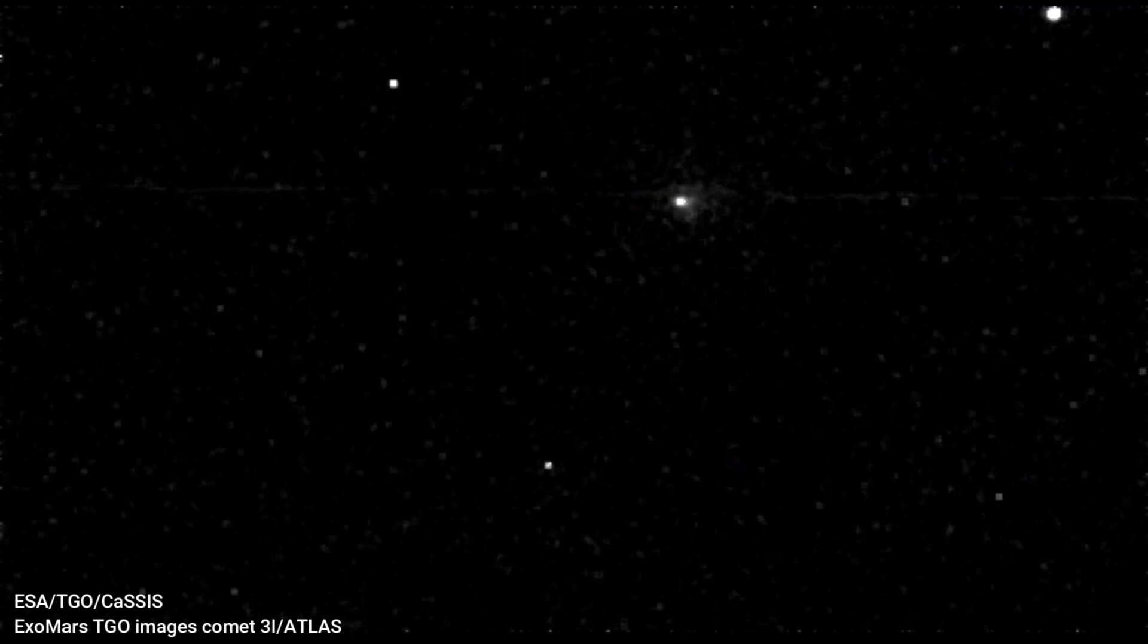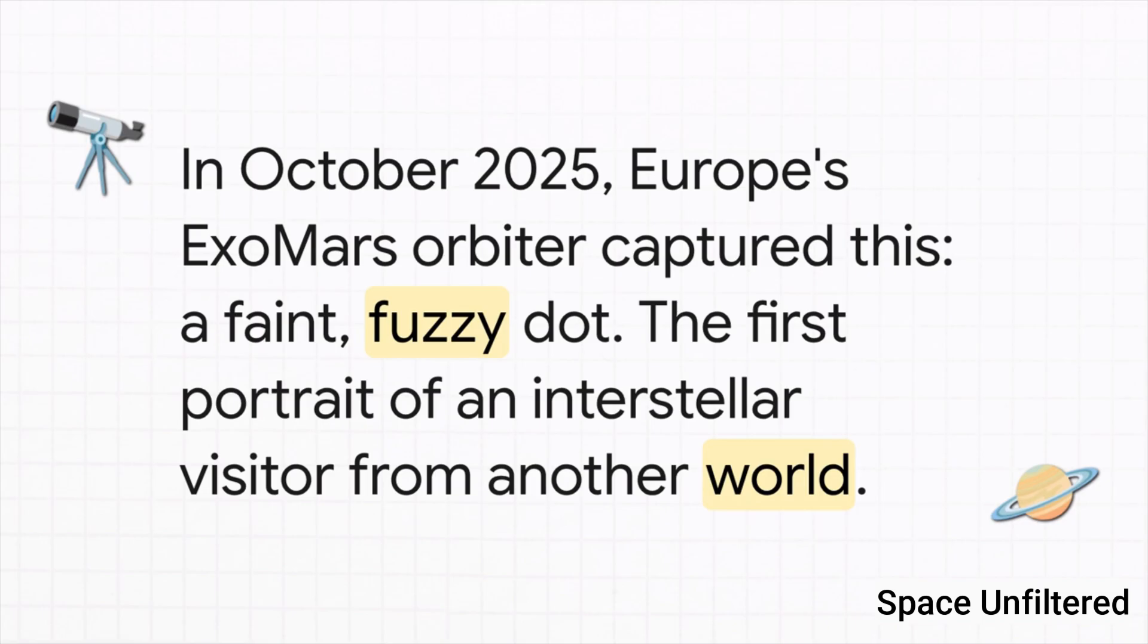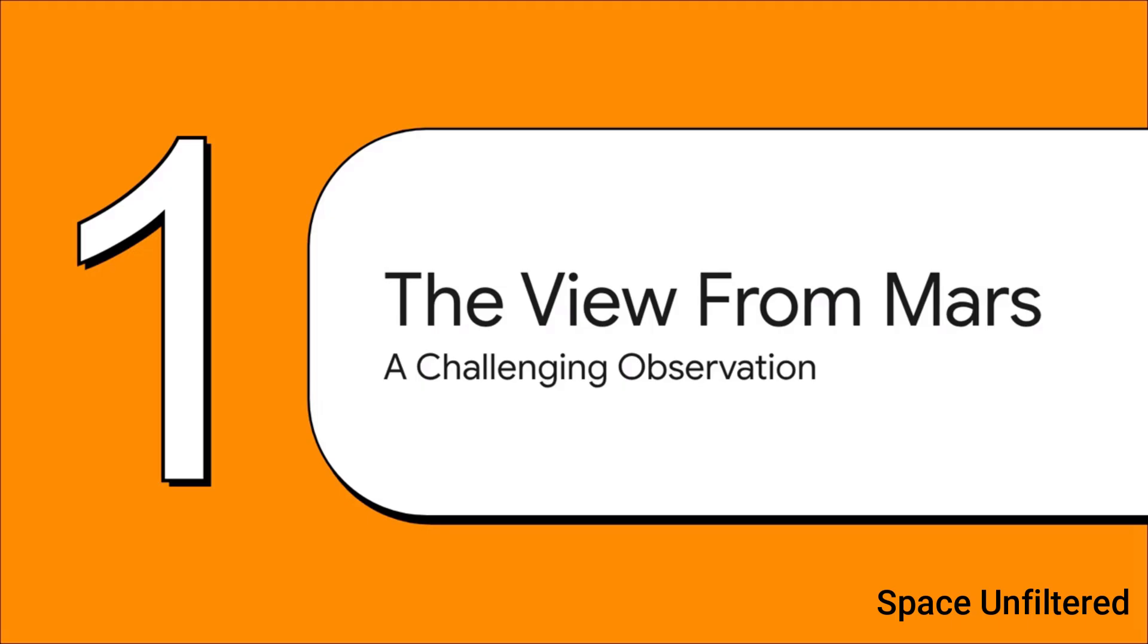And here it is. This is that historic image from the ExoMars Trace Gas Orbiter. It's not some spectacular streak across the sky, it's just a faint fuzzy dot. But this is the very first portrait of an object from a completely different star system, taken from the viewpoint of another planet. And this single simple image kicked off a whole scientific investigation to figure out what we couldn't see.